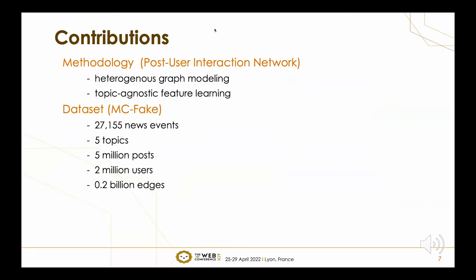Our paper aims to solve these two problems from two aspects. The first is the proposed method, the Post-User Interaction Network for fake news detection, which formulates the task as a heterogeneous graph modeling task and applies topic-agnostic feature learning to make the model generalizable to novel topics. The second is the MC Fake dataset — a fake news dataset with social context containing 27,000 news events across five topics, 5 million posts, 2 million users, and 0.2 billion edges.